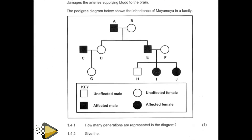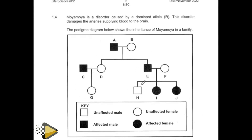Now let's go to question 1.4. Take note of this — Moya Moya is a disorder caused by a dominant allele. I told you yesterday that you have to take note of this because they can bring a dominant allele or a recessive allele. This disorder damages the arteries supplying blood to the brain. The pedigree diagram below shows the inheritance of Moya Moya in a family.